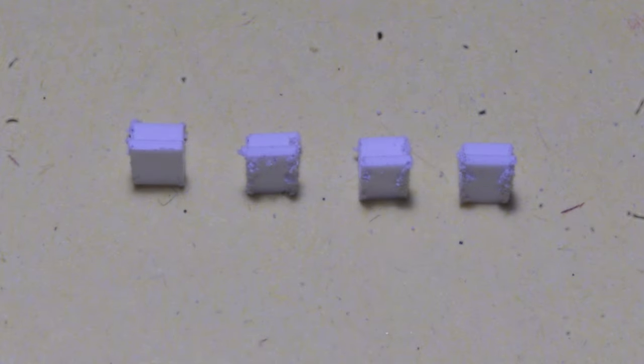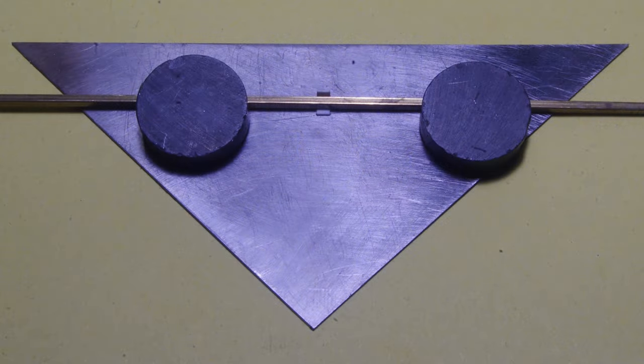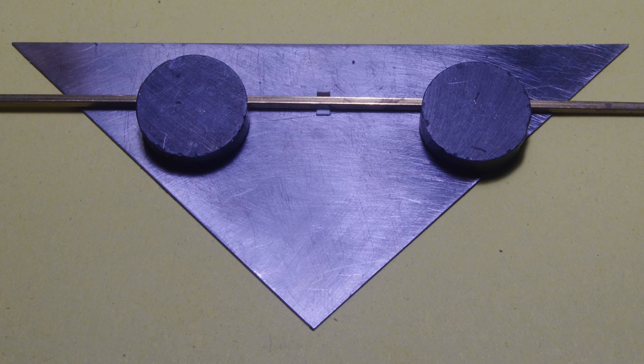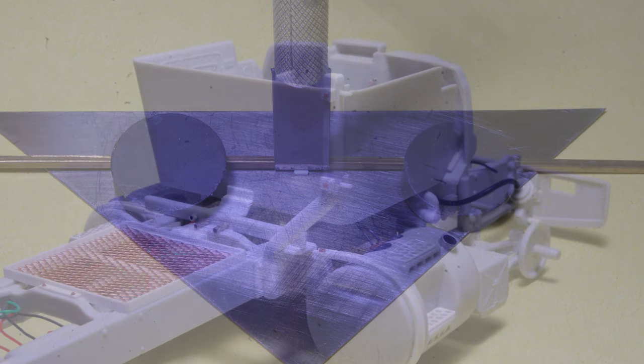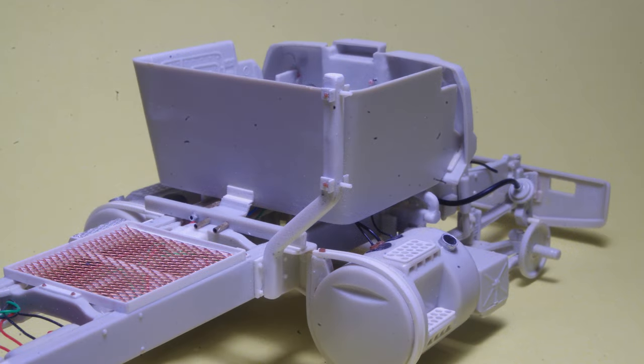To represent attachment points where the muffler would attach to the stack bracket on a real truck, short pieces of 1/8 styrene angle were cut using a miter box for consistency. One leg of the angle was trimmed shorter, and to keep this length consistent, a spacer was held in place using magnets, and the excess length was trimmed off using a chisel blade and a hobby knife. These pieces were glued in place with the longer leg attached to the stack bracket, and bolt head castings were added to simulate fasteners.